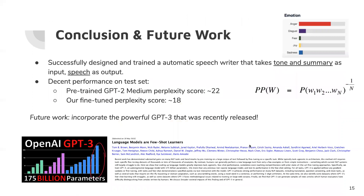In conclusion, we successfully trained an automatic speechwriter capable of generating reasonable speeches when given summary and tone as input. We found that our fine-tuned model had a reasonable perplexity score of about 18 on our test dataset, while the pre-trained model had a score of about 22. Future work could incorporate larger models such as the recently released GPT-3, more training data, and expanded speeches outside the domain of politics. Thank you.